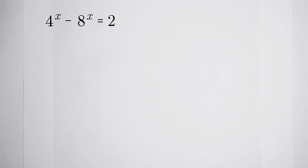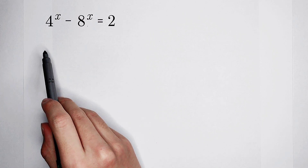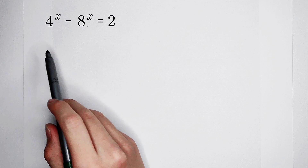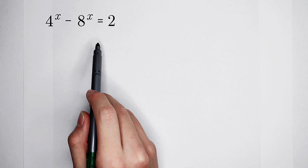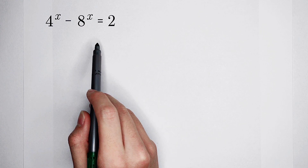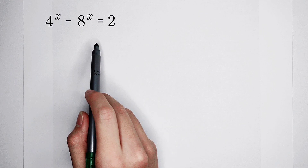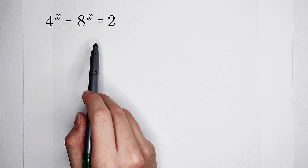Welcome back to Math Winner. We have an equation about x: 4 to the power of x minus 8 to the power of x is equal to 2. What should we do? How should we deal with this question?